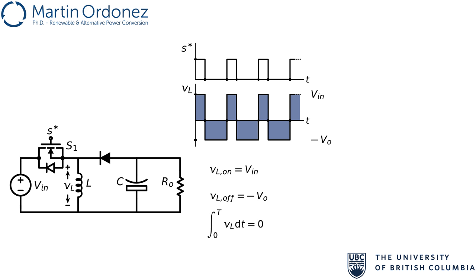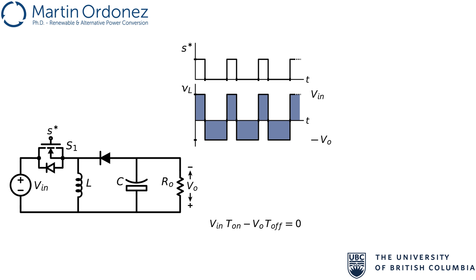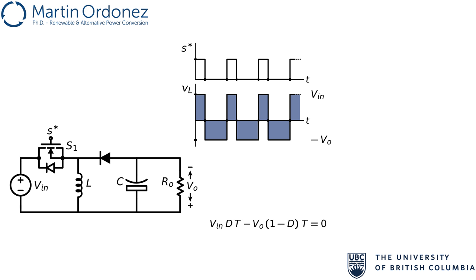Expanding the integral for the on and off times, and considering the voltage is constant during these times, the integral becomes the product of the on state voltage V_in times the on time, minus V_o times the off time. Representing T_on and T_off as a function of the switching period and duty cycle leaves the equation only as a function of the input and output voltage, the switching period, and the duty cycle. Solving for the duty cycle gives an input-to-output voltage ratio.